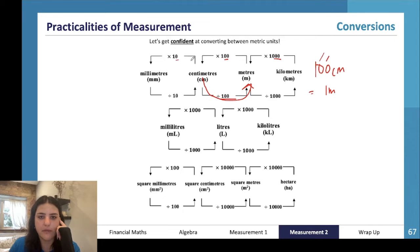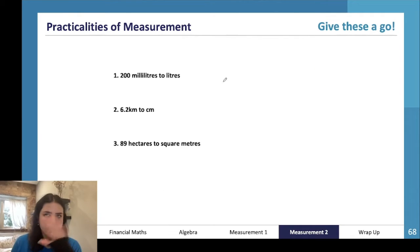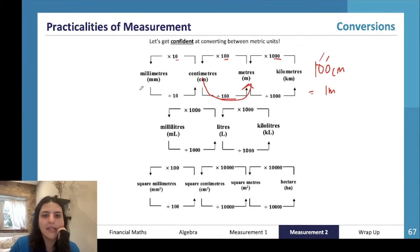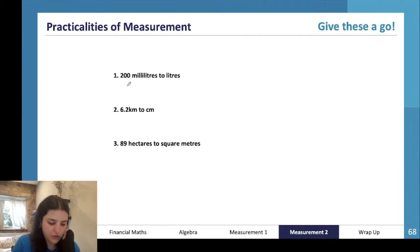So we're going to do these three conversions. First, 200 milliliters to liters. We need to first go back to our conversion - milliliters to liters is going to be dividing by a thousand. So we're going to do 200 divided by a thousand, which is 0.2. So it's going to be 0.2 liters.